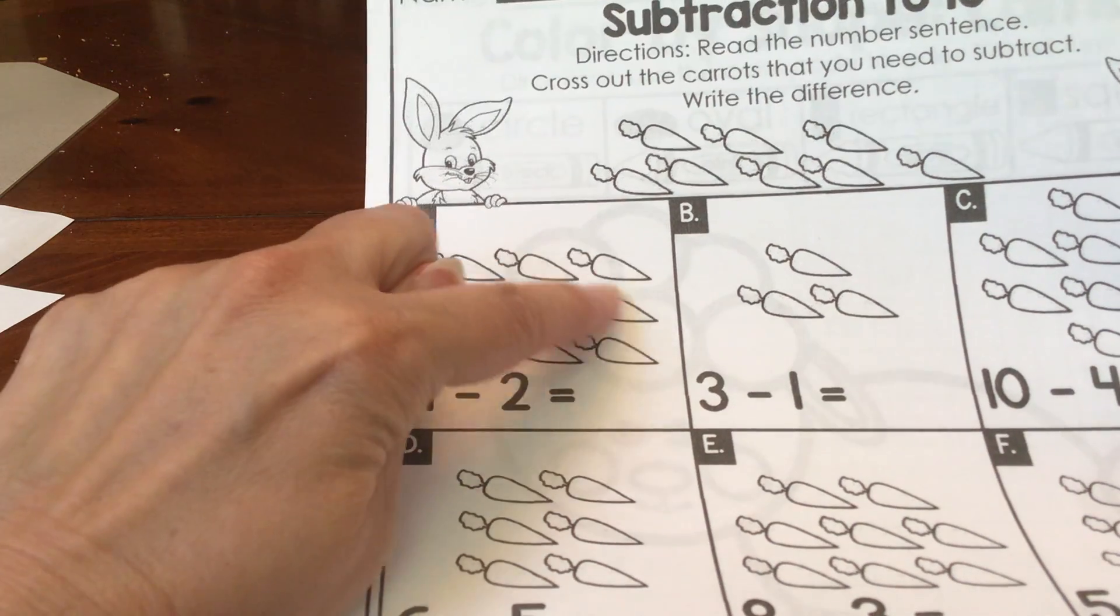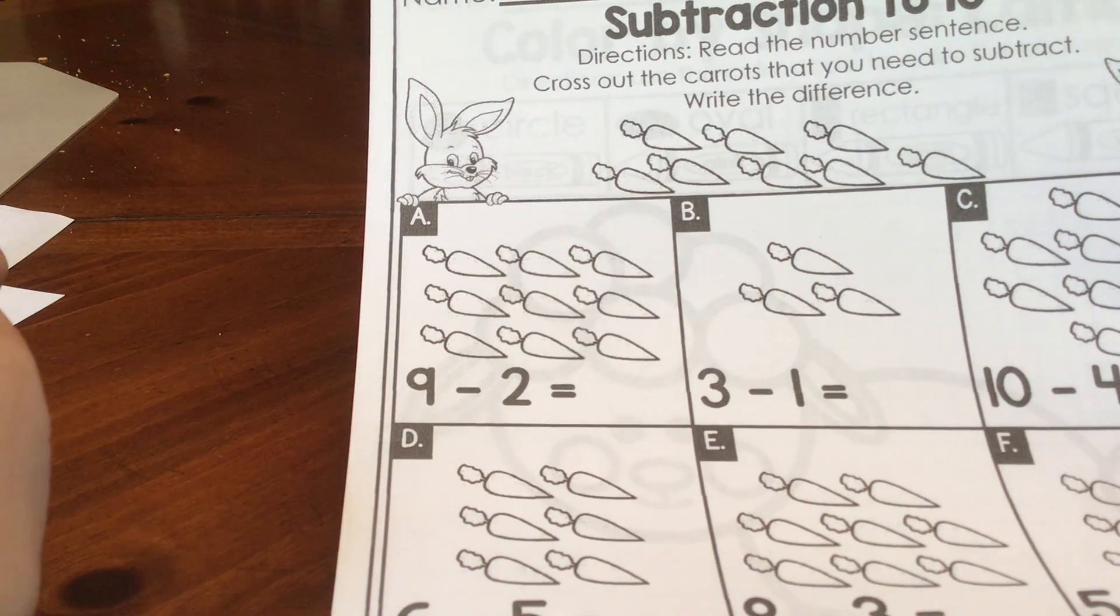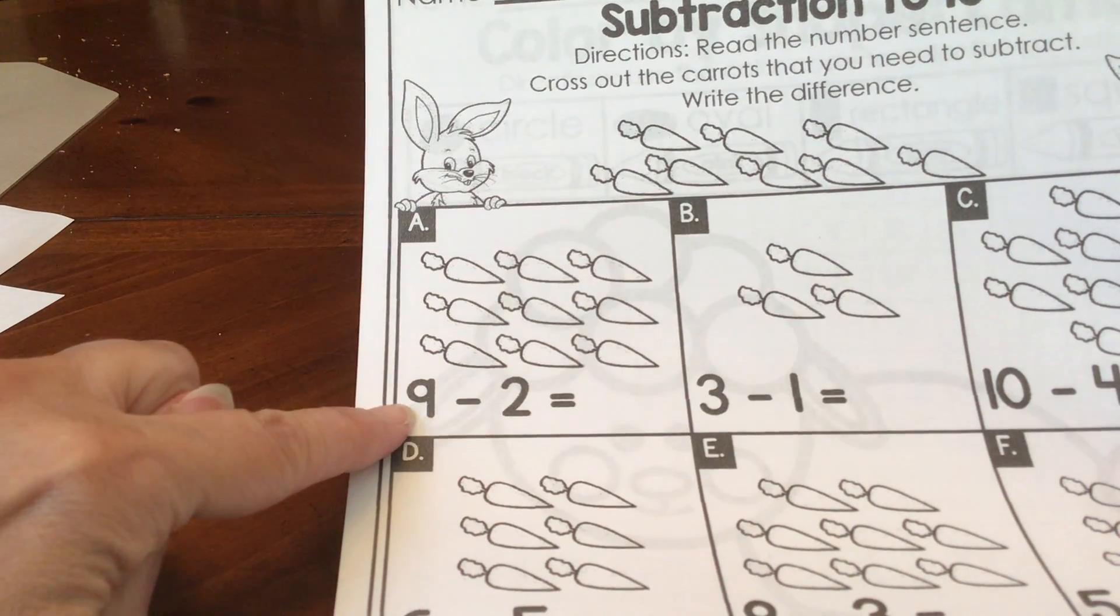One, two, three, four, five, six, seven, eight, nine. There are nine carrots and our little number sentence starts with nine.